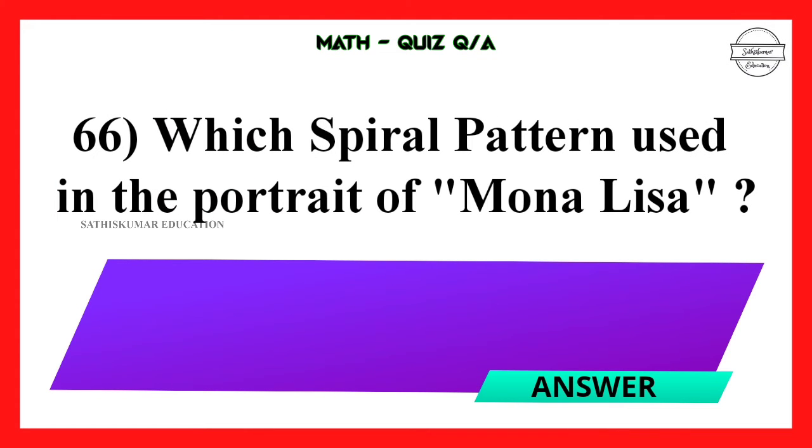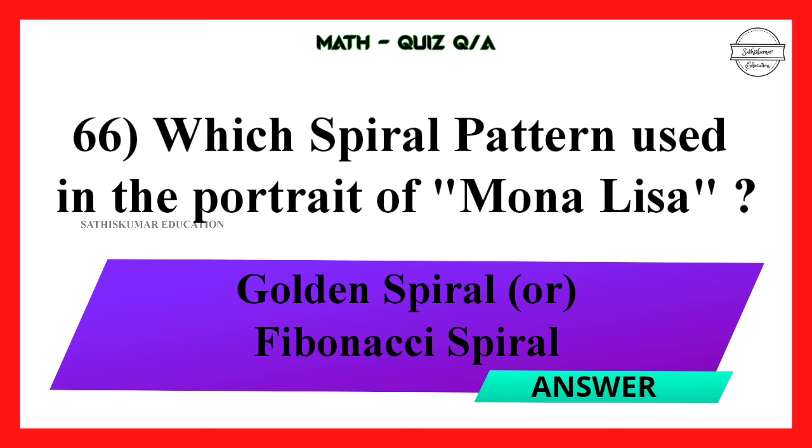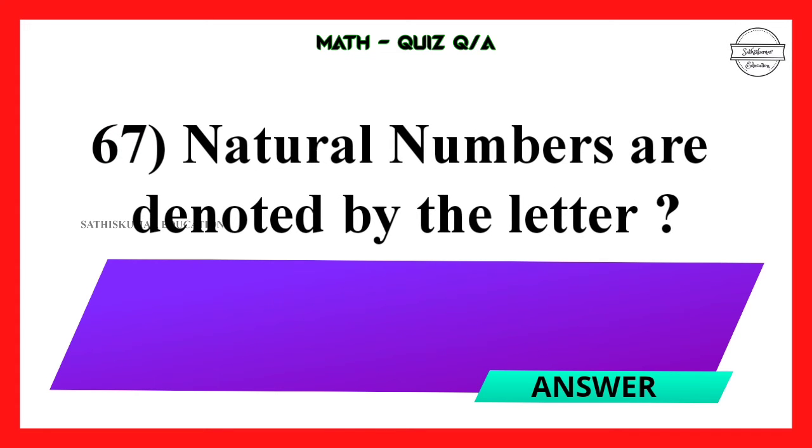Which spiral pattern used in the portrait of Mona Lisa? Golden spiral or Fibonacci spiral. Question number 67: Natural numbers are denoted by the letter N.